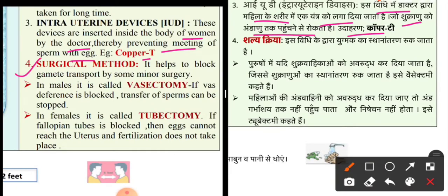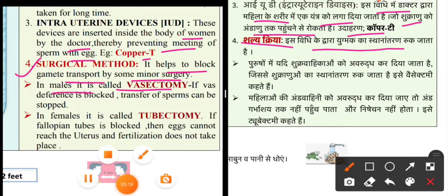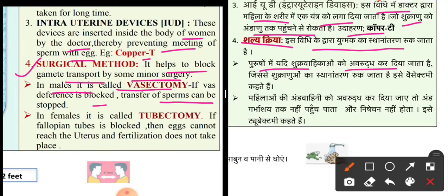After that, surgical methods help to block the gamete transport by some minor surgery. In males, it is called vasectomy — if the vas deferens is blocked, transfer of sperm can be stopped. In females, it is called tubectomy. If the fallopian tube is blocked, then eggs cannot reach the uterus and fertilization does not take place.